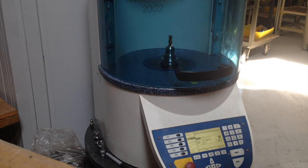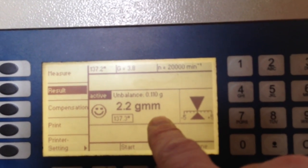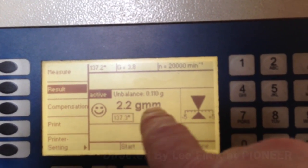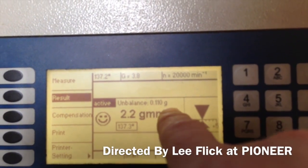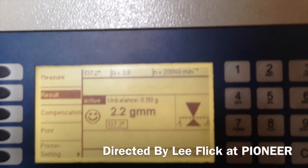And as you can see from the readout, this holder is checking 2.2 gram millimeter displacement of unbalance of 0.110 grams, it's G 3.8 at 20,000 RPM.